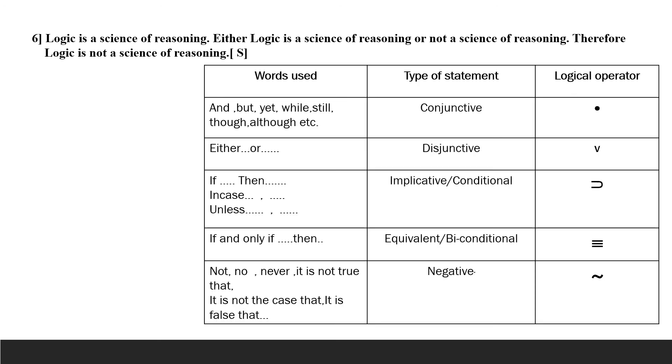Now let us take the sixth example. 'Logic is a science of reasoning' is the first premise. 'Either logic is a science of reasoning or not a science of reasoning' is the second premise. Therefore, 'logic is not a science of reasoning' is the conclusion. Let S represent 'logic is a science of reasoning.' The second premise symbolizes as S wedge curl S, and the conclusion is curl S.